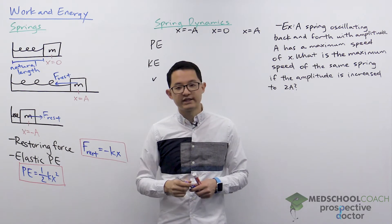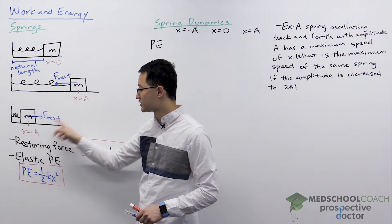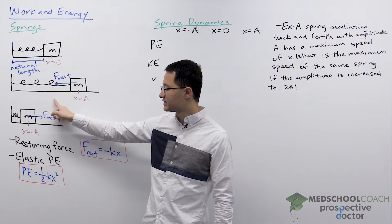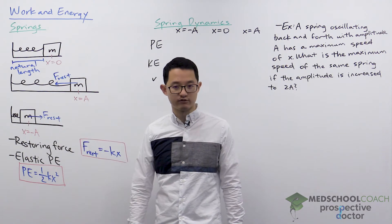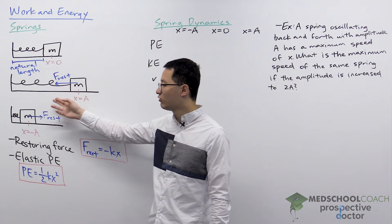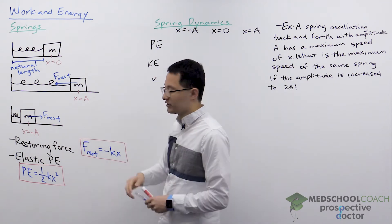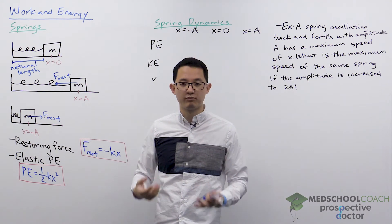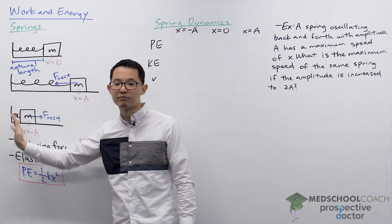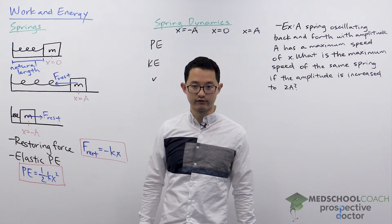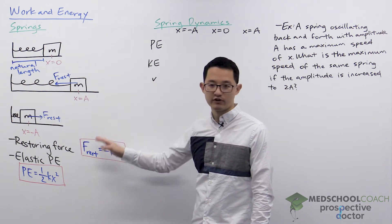If you look at the direction of the displacement, when the displacement is to the right — the positive direction — the restoring force is to the left, the negative direction. Essentially, the restoring force is always in the opposite direction of the displacement. Another important thing is that the magnitude of the restoring force is proportional to the displacement: the farther you pull or compress the spring, the stronger the restoring force.